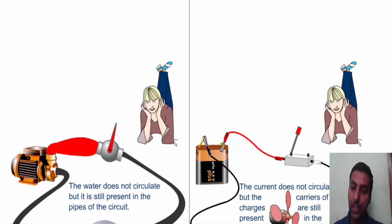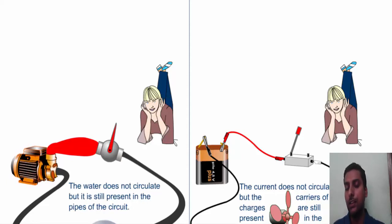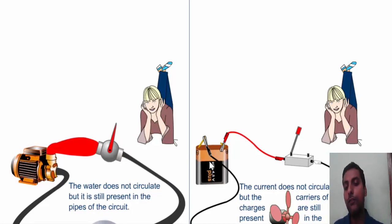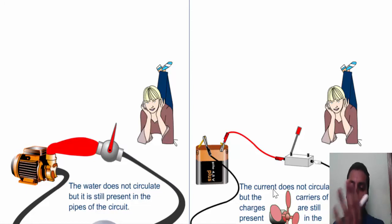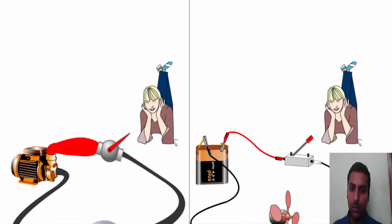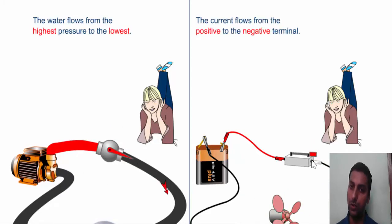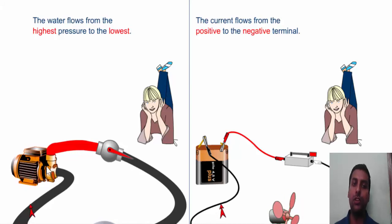Every wire, every metal has free charge carriers — that is electrons — inside it, but they are not in actual motion in the conductor's free state. Whenever an external force is applied on that conductor — that is, a battery or electrical source — it forces the free electrons to move from one side to another, and that movement of charges constitutes current. As soon as the switch is closed, current flows from positive to the higher level, as water flows from higher pressure to lower pressure through the turbine.